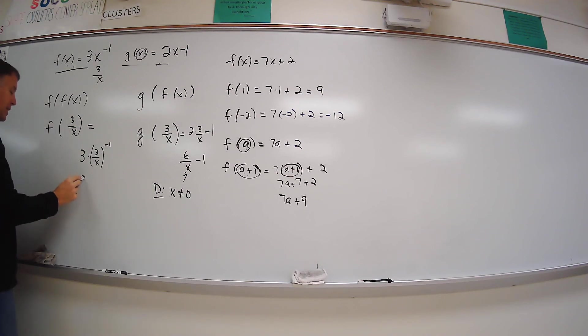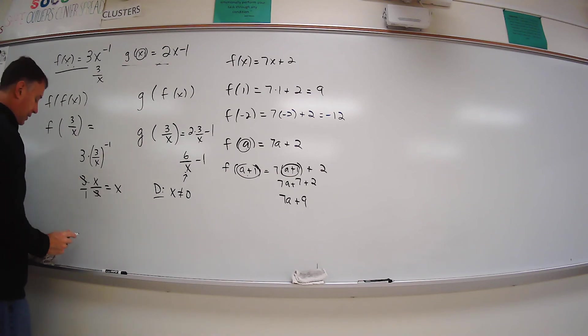Well, let's see what that means. If you take a fraction to the negative 1 power, it means you flip it. So it's going to be x over 3. So my 3s cancel on this equals x.